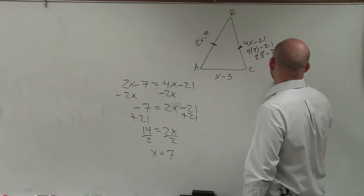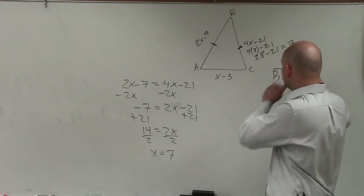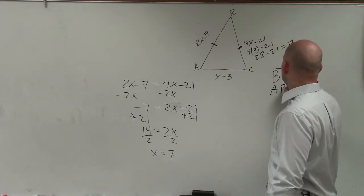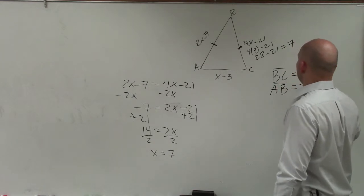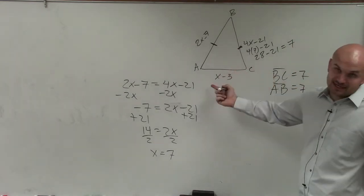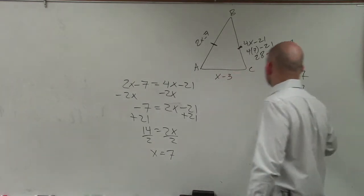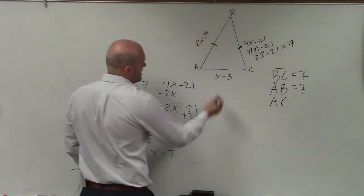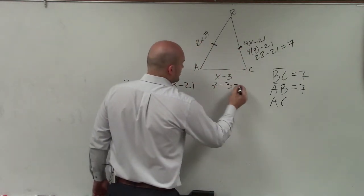So therefore, I know that the line side BC is equal to 7. So therefore, AB is going to be exactly the same. And then the last thing I need to do is figure out what AC is. So to do that, I just plug in my value of x, which is 7, minus 3, which equals 4.